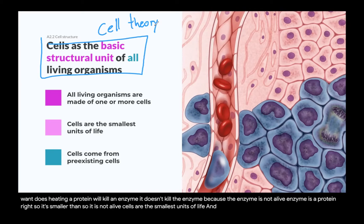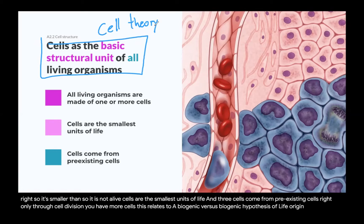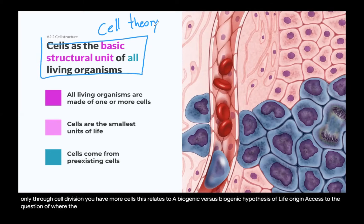And three: cells come from pre-existing cells. Only through cell division do you get more cells. This relates to the abiogenic versus biogenic hypothesis of life's origin, and takes us to the question of where the first cell came from — but because this is a higher-level topic, we are not going to discuss it in this video.